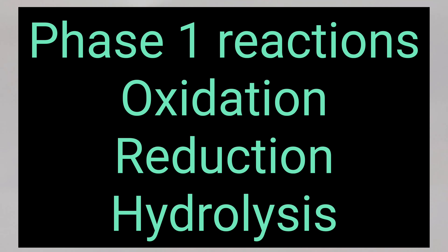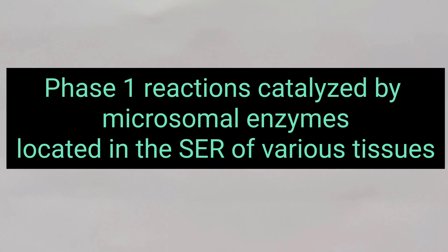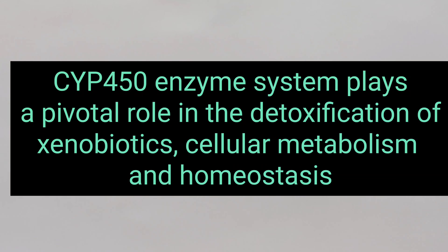Phase 1 reaction comprises of oxidation, reduction and hydrolysis. These reactions are catalyzed by microsomal enzymes that are located in the smooth endoplasmic reticulum of various tissues such as liver, kidney, lungs and intestine. Cytochrome P450 constitutes the most important enzyme system that accounts for the metabolism of majority of the drugs.